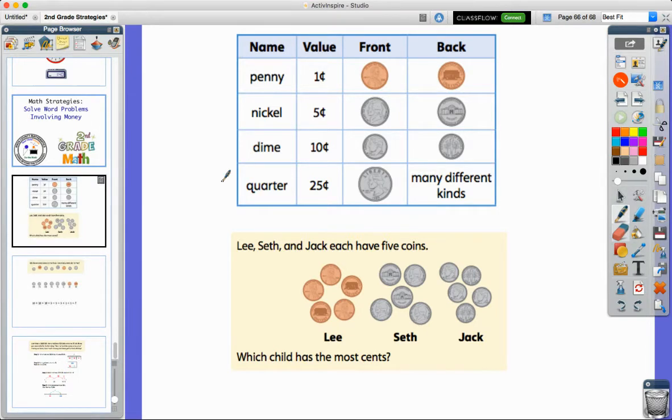Pennies are equal to one cent. They're our smallest form of currency, worth one cent, and they have Abraham Lincoln on the front with the Lincoln Memorial on the back. Then we have the nickel which is worth five cents, so if you have five pennies, that will be equal to a nickel.